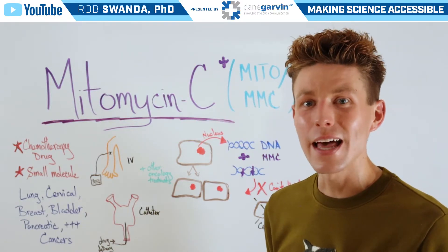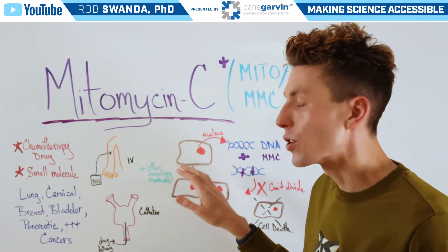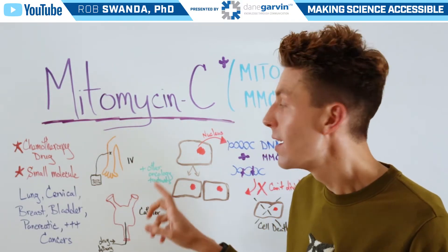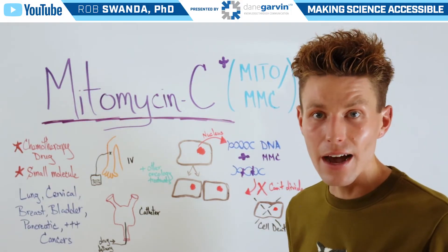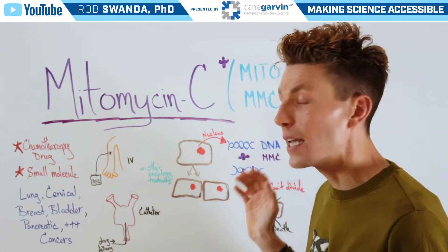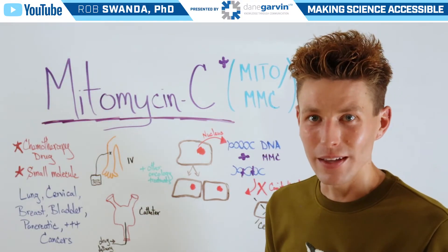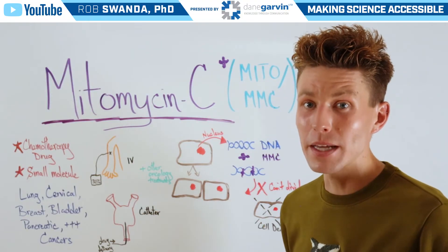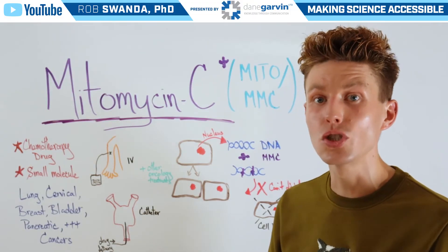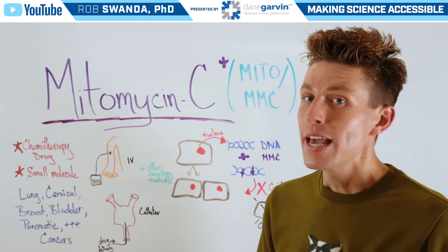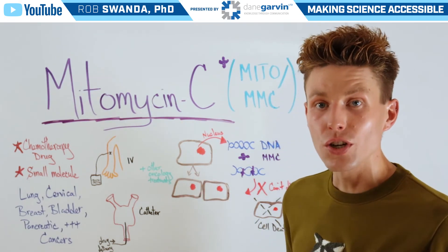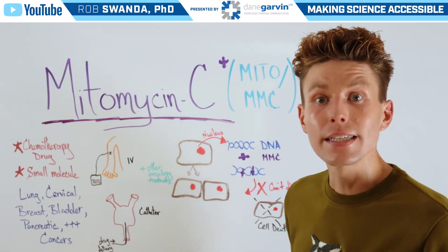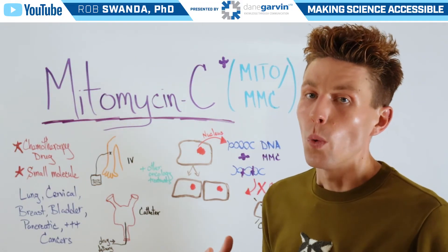Now, the way that mitomycin C works is that once it's inside of our body, it's able to enter our cells. Once inside our cells, it becomes activated and it heads to the nucleus, where our DNA is housed. Once mitomycin C interacts with our DNA, it intercalates with it — it holds on and doesn't let go. Therefore, it causes a lot of DNA damage and doesn't allow our DNA to begin to replicate. That replication process is critical to allow one cell to turn into two cells and so on. With mitomycin C attached to our DNA, that process can't happen and eventually that cell will die.